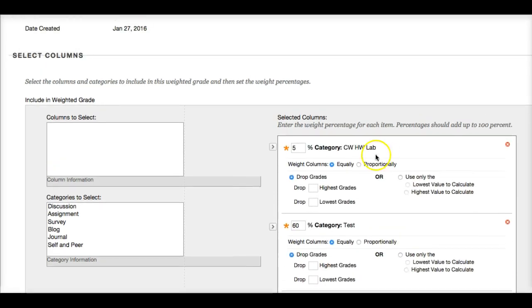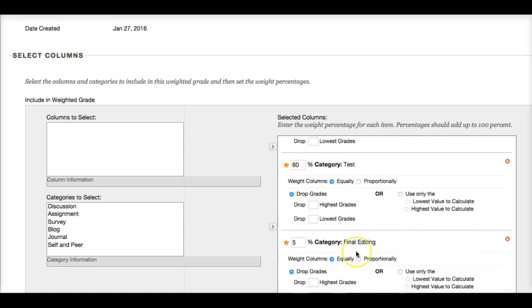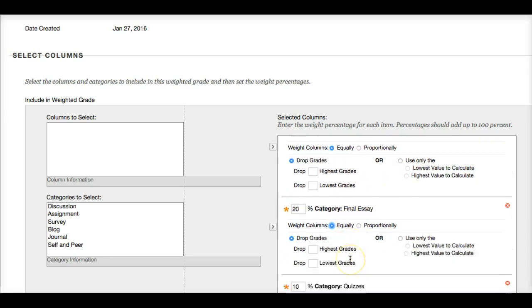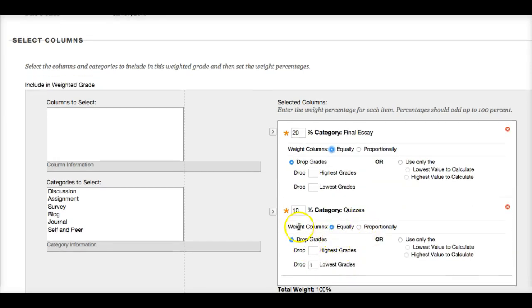So we can go back and check. Classwork, homework, 5%. We're not dropping any homework grades. Tests, all tests are worth 60%. The final editing exam is worth 5%. Final essay is 20%. Quizzes are 10% and I'm dropping the lowest quiz grade.